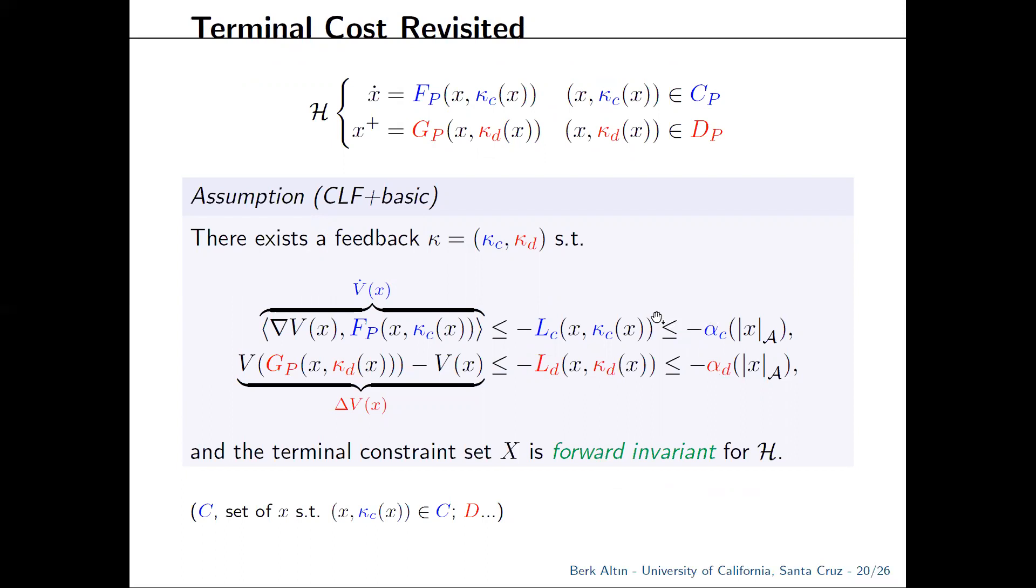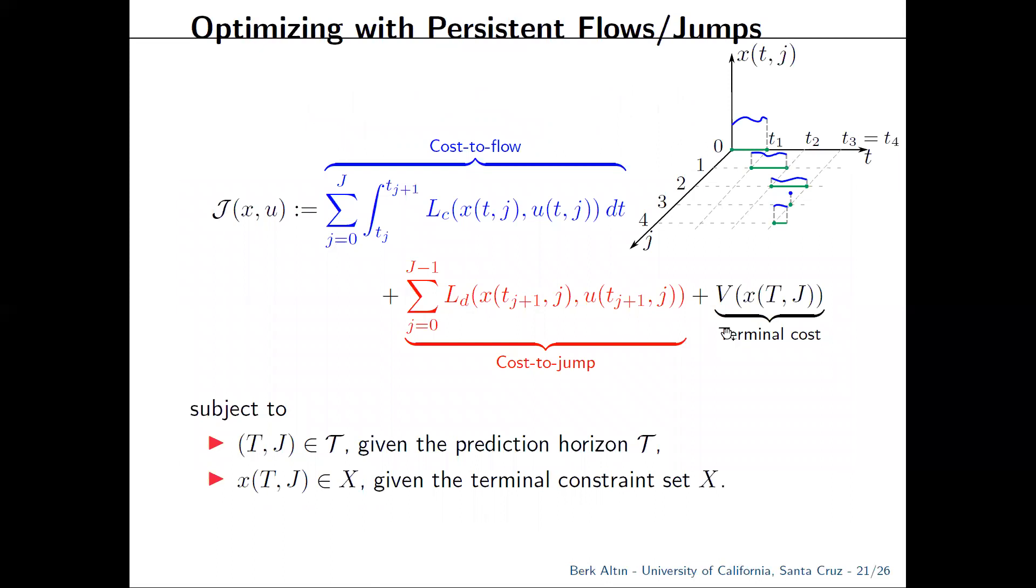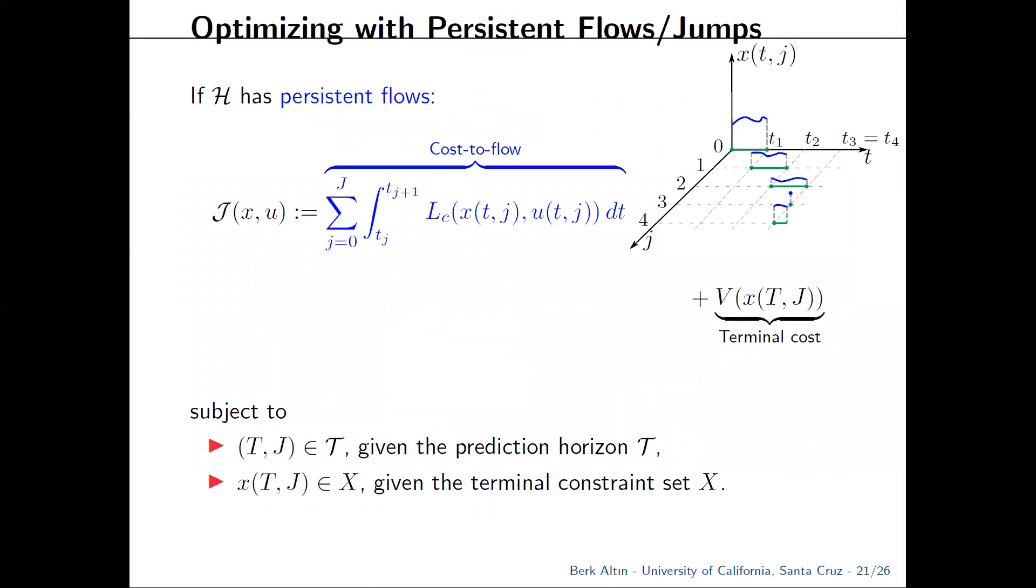So if we have persistence of flows, then we will not insist on this inequality. And if persistence of jumps, then we won't insist on this one. Which means that in theory, if you have persistent flows, you can select your jump cost to be zero. And for persistent jumps, the flow cost to be zero. And this simplifies both the design of your cost function and reduces computational burden of the minimization.